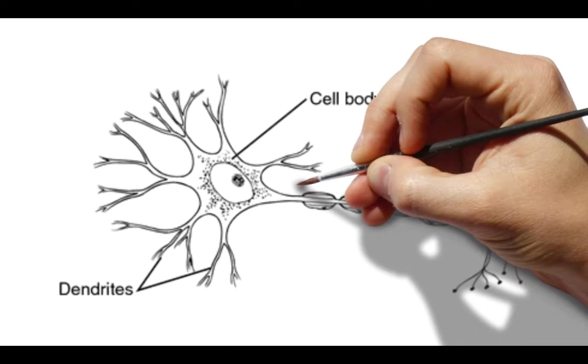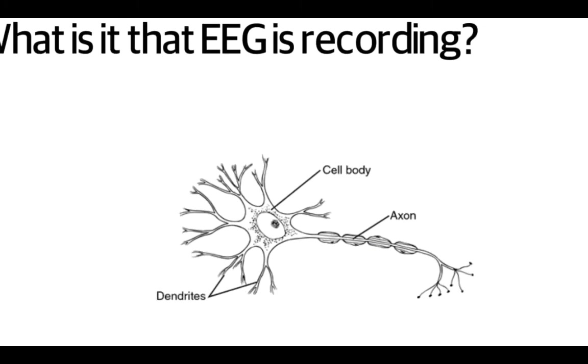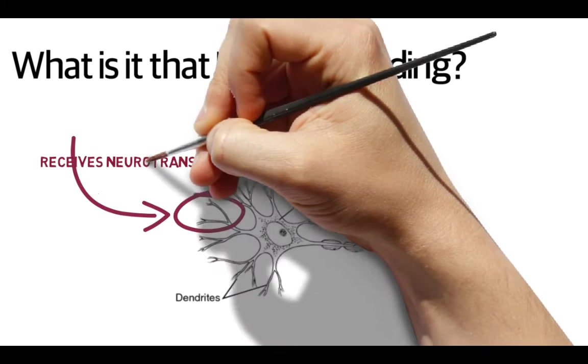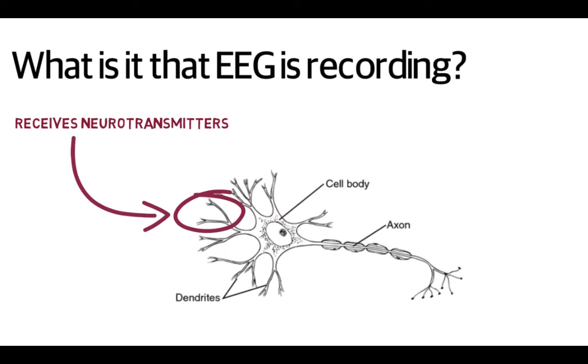Your brain is made up of billions, actually hundreds of billions of cells called neurons. The neurons have axons which release neurotransmitters and dendrites which receive them.